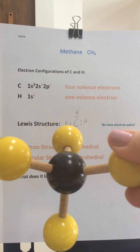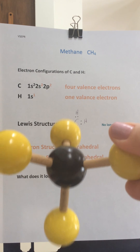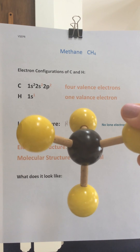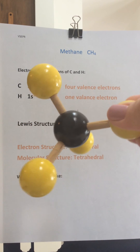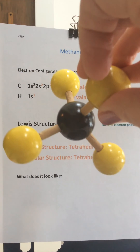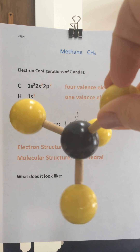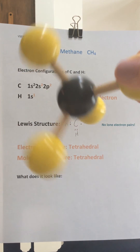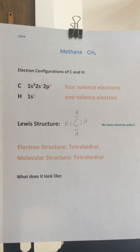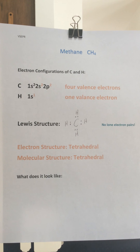You might think that you could take a central molecule and lay it flat like that Lewis diagram and arrange the hydrogens around it to maximize the distance between those bonds, but it's not true. This is the shape that maximizes the distance: a tetrahedron. So the electron structure, because there are four bonds and four pairs of electrons with no lone electron pairs, is tetrahedral — and so the molecular structure is also tetrahedral.